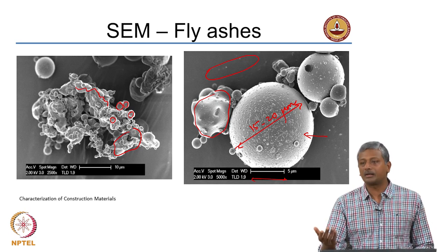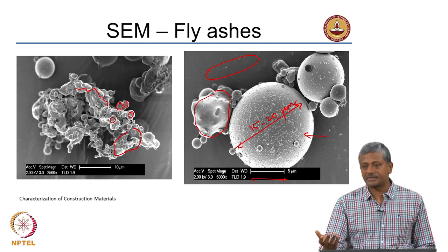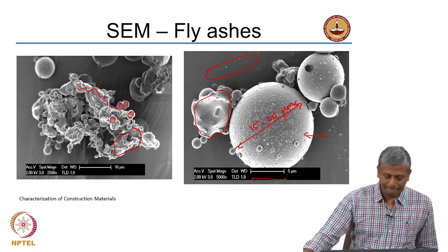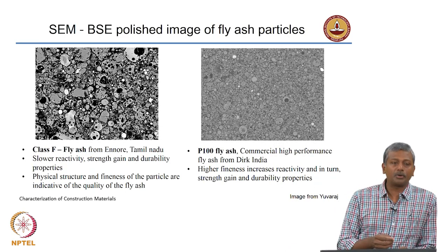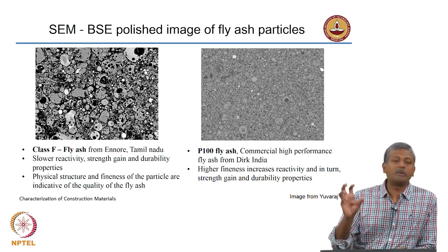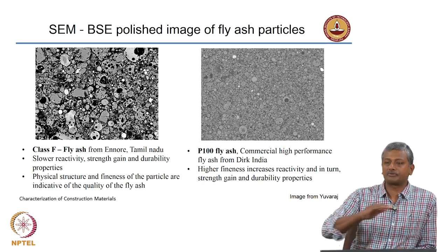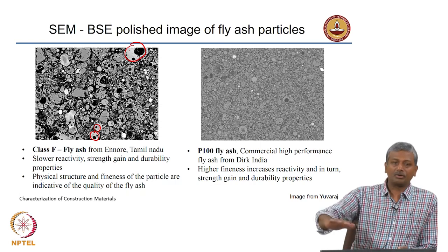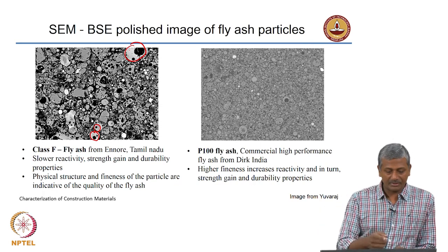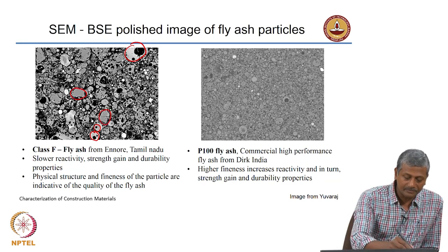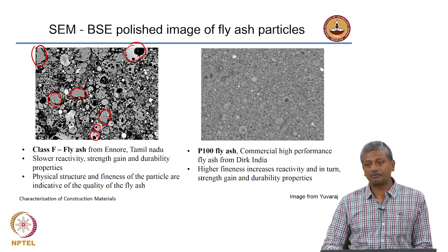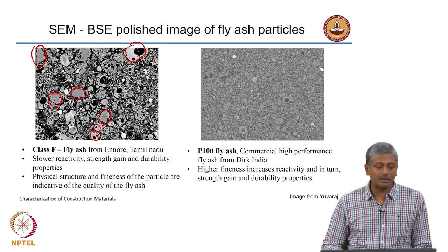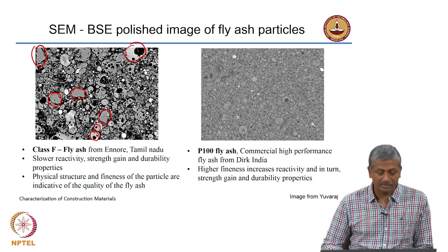If you look at class F or siliceous fly ash, it is generally composed of 50 to 60% silica, with the remaining 30 to 40% being mostly impure phases. The irregular shapes seen around the spherical particles may be attributed to impurities such as quartz. If you take an X-ray diffraction of fly ash, you will find crystalline phases like quartz and mullite present in the system. When the same fly ash is embedded in epoxy and polished, you get circular features resulting from the polishing of spherical particles — the projections of spheres on a horizontal plane.